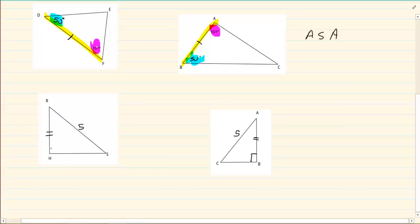And then the last one we have is where we have a 90 degree, we have the hypotenuse side, and then we have any remaining side. This one is called 90 degrees hypotenuse side.